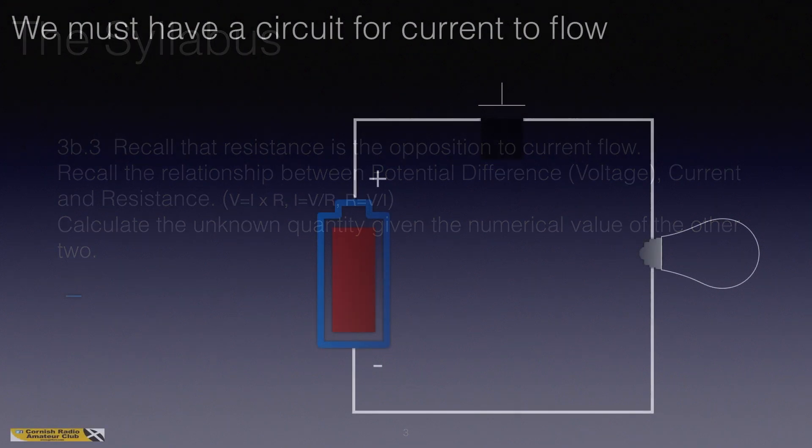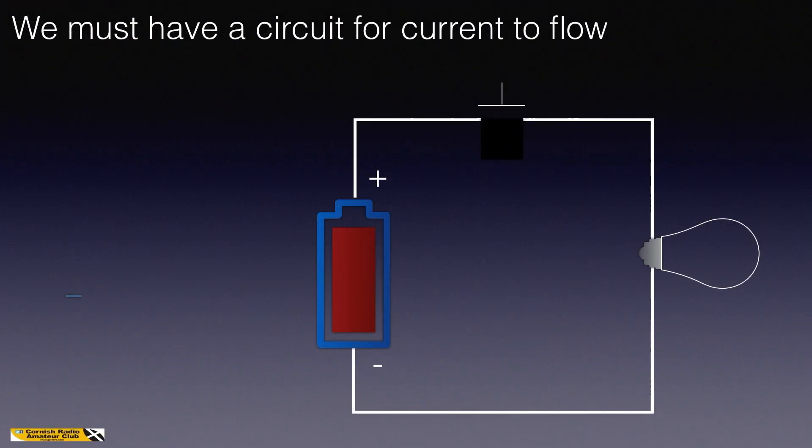Just a quick reminder then, we must have a circuit for current to flow. When the circuit is closed, electrons flow from negative to positive. This is electron current flow. We also consider that conventional current flow flows in the opposite direction. There are background videos giving the historical perspective on why that's the case.